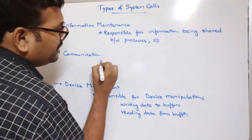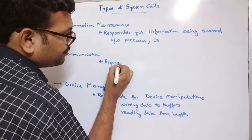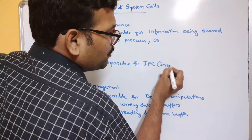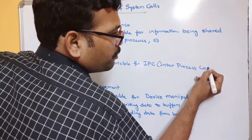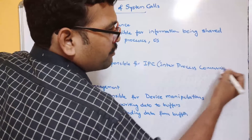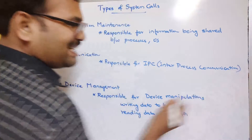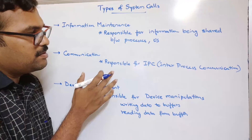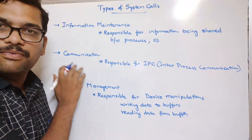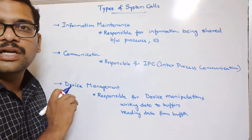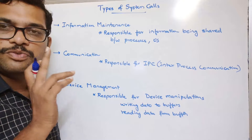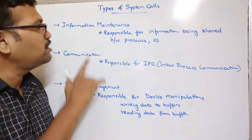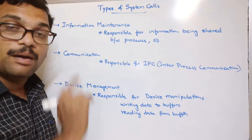The fifth category is communication system calls. These are responsible for IPC — inter-process communication. In order to communicate between different processes, or to establish connections between processes from one system to another, communication is achieved with the help of these communication system calls. So these are the five categories: process control, file management, device management, information maintenance, and communication.